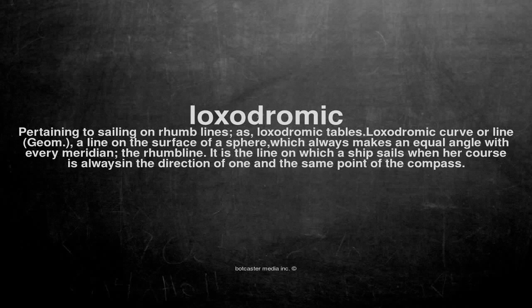LOXEDROMIC. Pertaining to sailing on rhumb lines, as loxedromic tables, loxedromic curve or line. In geometry, a line on the surface of a sphere which always makes an equal angle with every meridian — the rhumb line.